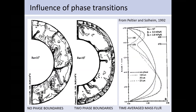What we see here is the time-averaged mass flux plotted over depth. The solid line is a model with no phase transitions, and the dashed lines are models that do have a phase transition. The mass flux is smaller where the phase transition is, and the difference between the models is the phase transition width — a thinner phase transition means the flow is more inhibited.